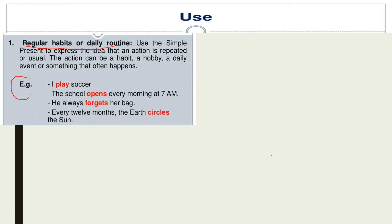For example, it is written here: 'I play soccer.' That means I play soccer often, every day. 'The school opens every morning at 7 AM.' That is a regular event. 'He always forgets her bag.' That is maybe a habit. 'Every 12 months, the earth circles the sun.' That is a universal truth. So, that is the first use — for regular habits or daily routine — that we use the simple present tense.